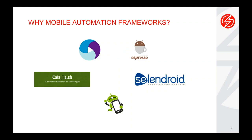Besides Appium and Espresso, there are other frameworks common in the market — not homegrown — like Calabash, which started with Xamarin and was adopted by Microsoft following the acquisition. However, Microsoft has announced that they are dropping support for Calabash, and the community is trying to understand whether this will continue as open source. At the moment, there is a lot of uncertainty around it.